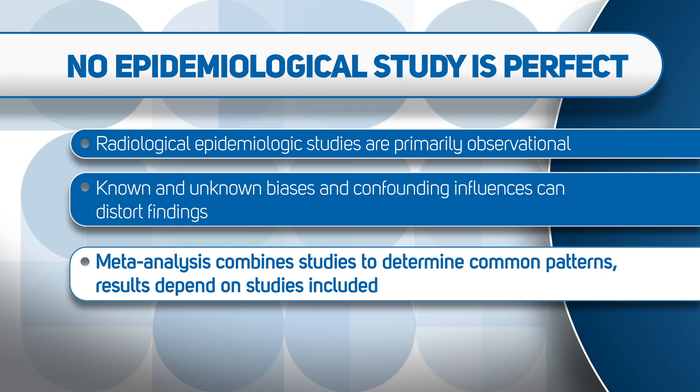There are problems, though, with meta-analyses and pooled analyses which hamper interpretation, particularly in radiation epidemiology. Results, for example, can be very dependent on what studies are included or not included. Some of the poorest studies can have the largest numbers and unduly influence the meta-analyses findings. Some high-quality but negative studies may be excluded. Some studies with negative findings are never published, and this is a form of publication bias. So care must be taken in interpreting meta-analyses of epidemiologic studies of radiation-exposed populations.